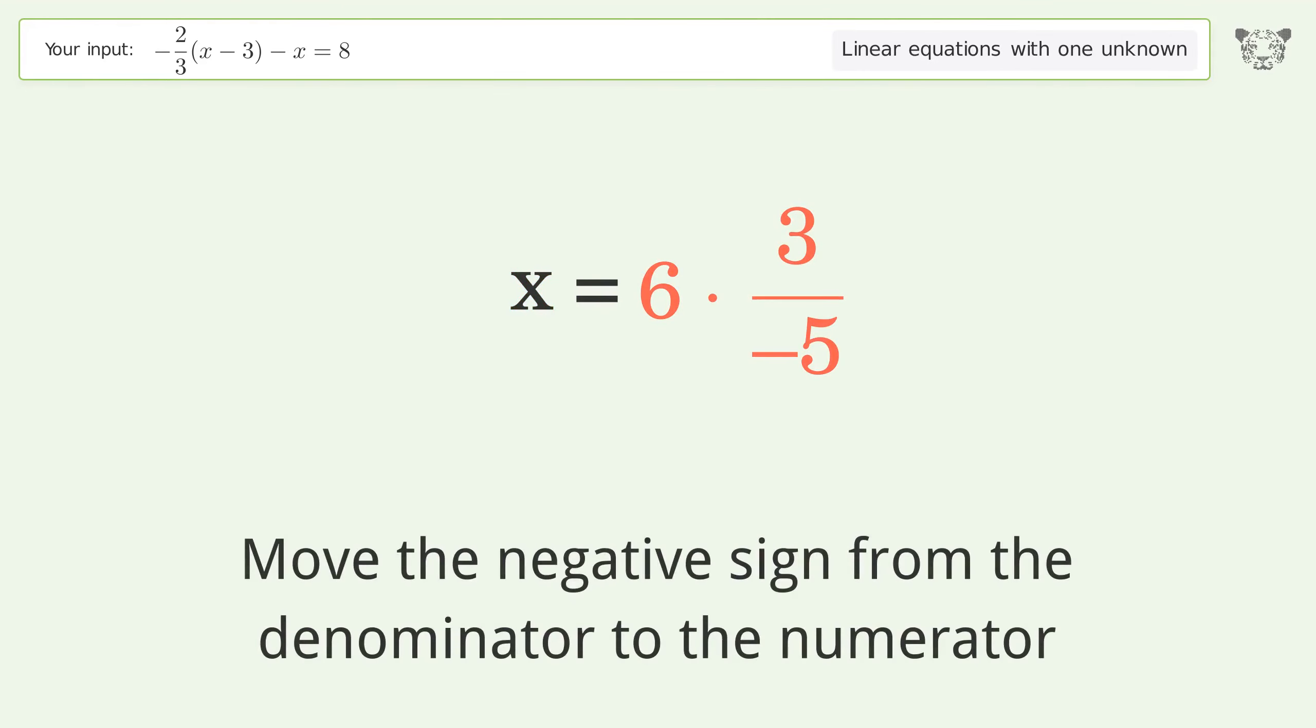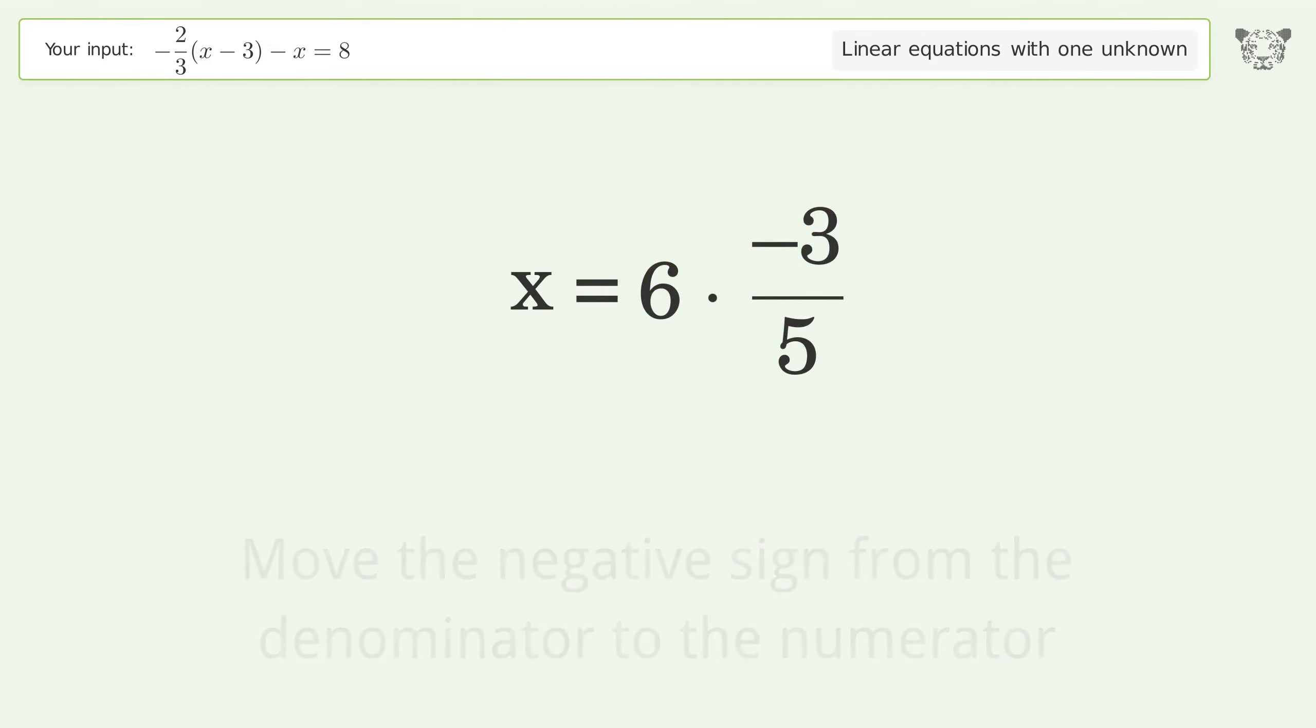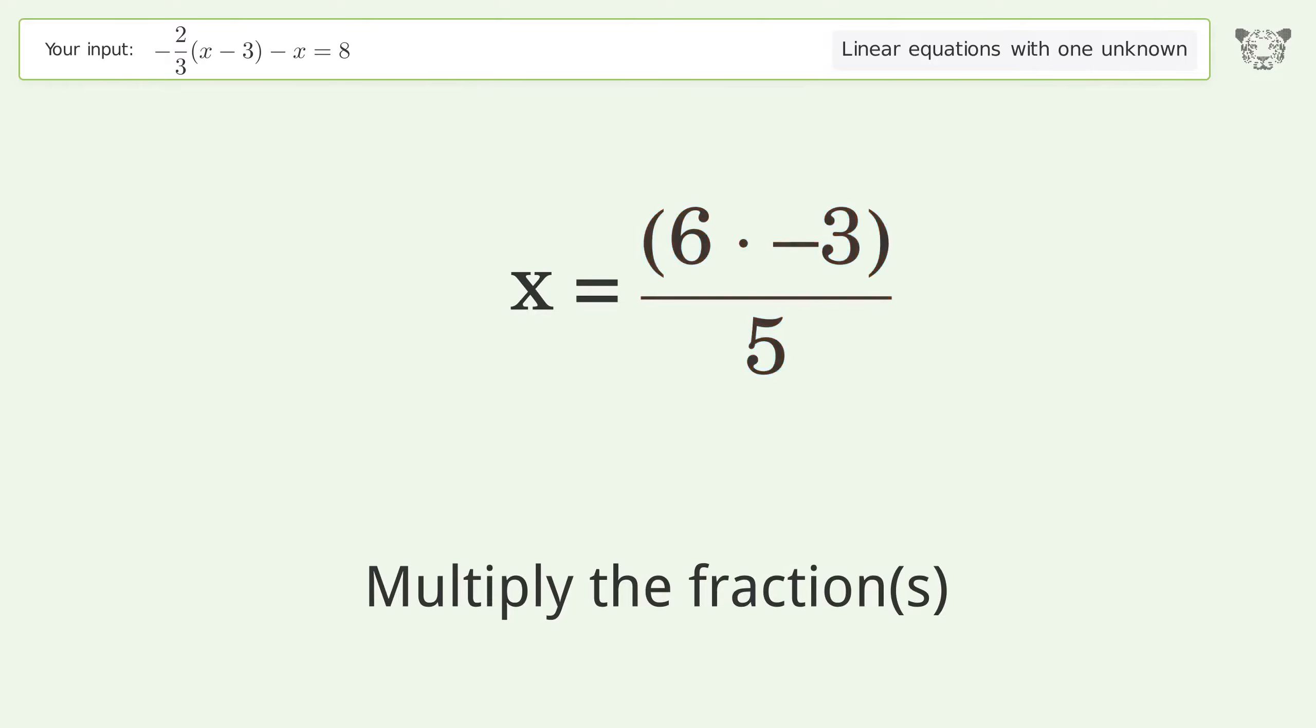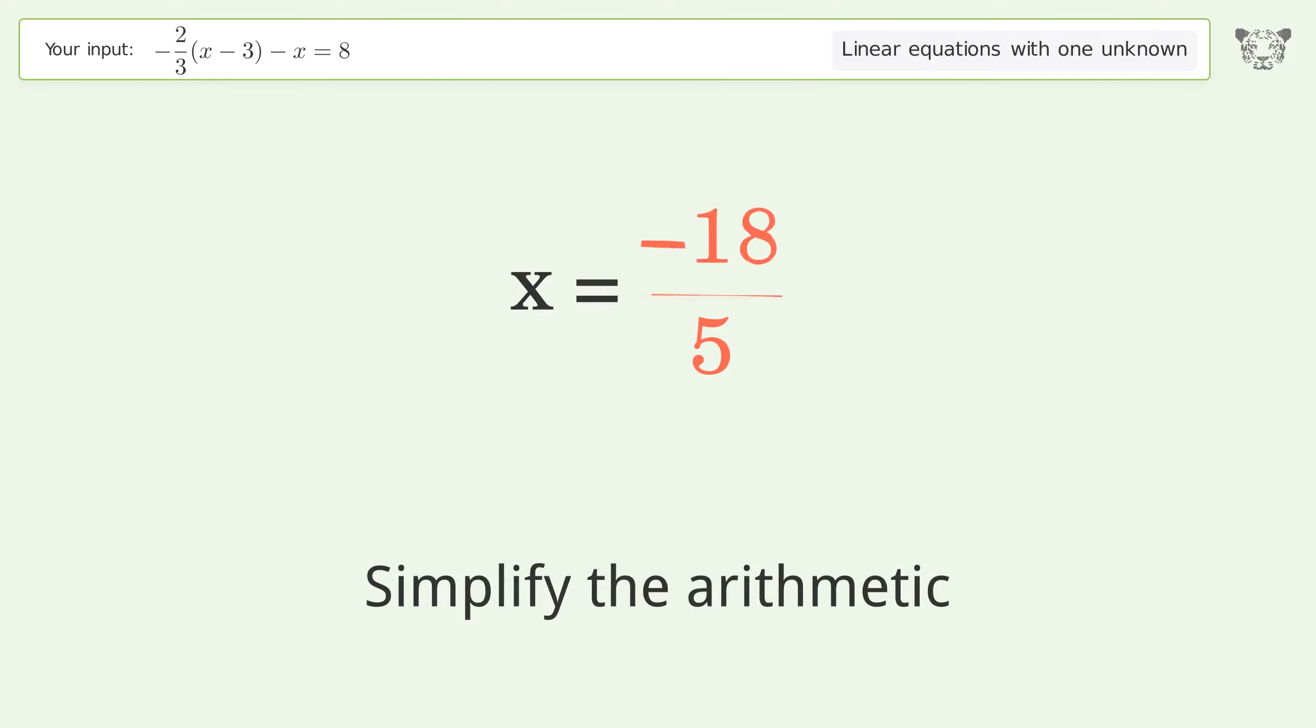Move the negative sign from the denominator to the numerator. Multiply the fractions. Simplify the arithmetic. And so the final result is x equals negative 18 over 5.